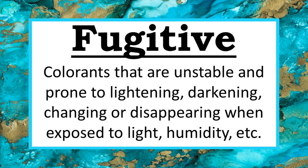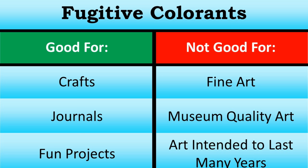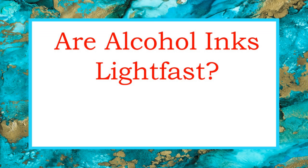Anything with a rating of poor or very poor is considered fugitive. You might have heard the term 'fugitive' before — in this case, no, it's not a criminal on the run. It's a colorant that's unstable and prone to changing when exposed to light, humidity, etc. It might lighten, darken, change, or disappear entirely over time. Fugitive colorants are not lightfast — they're great for crafts and journals, but not for fine art or art that you're hoping will still look vibrant and bright in a hundred years.